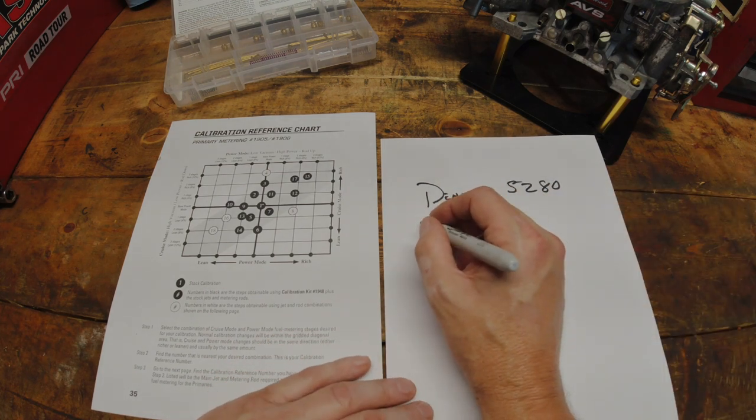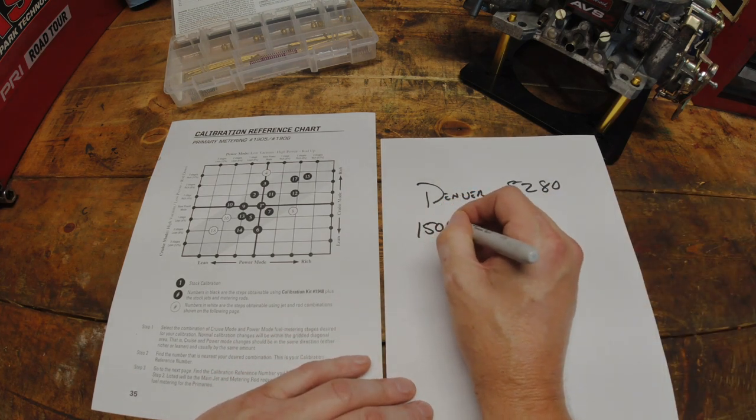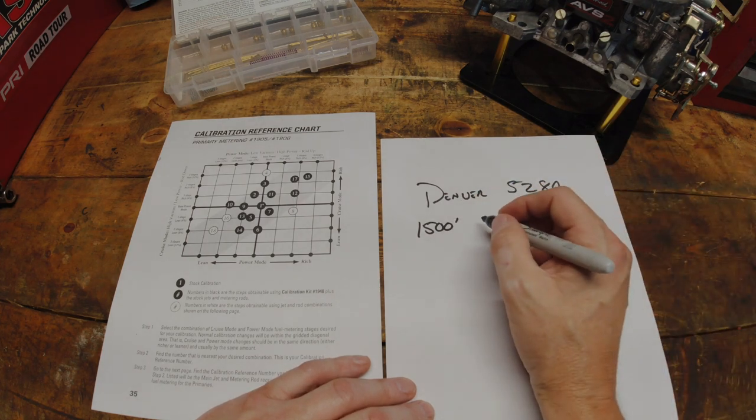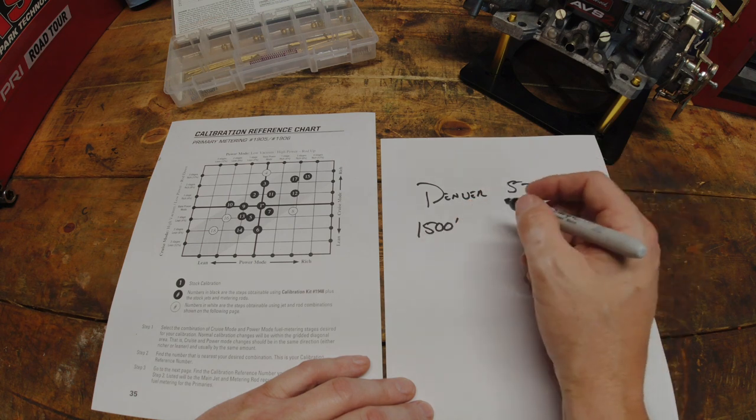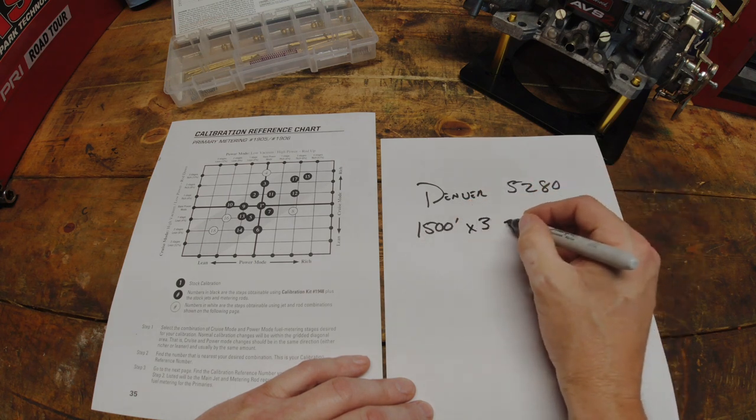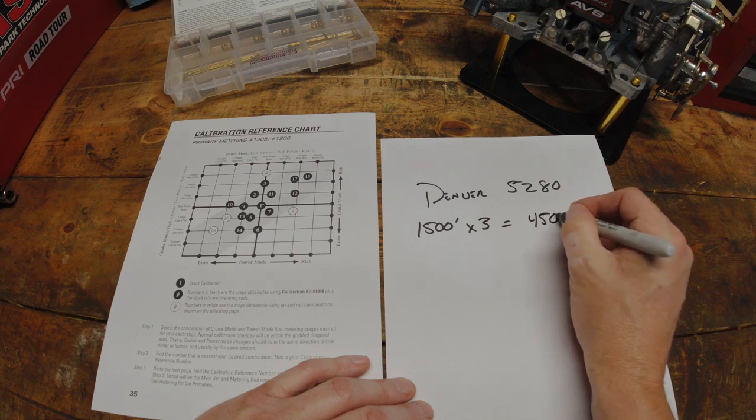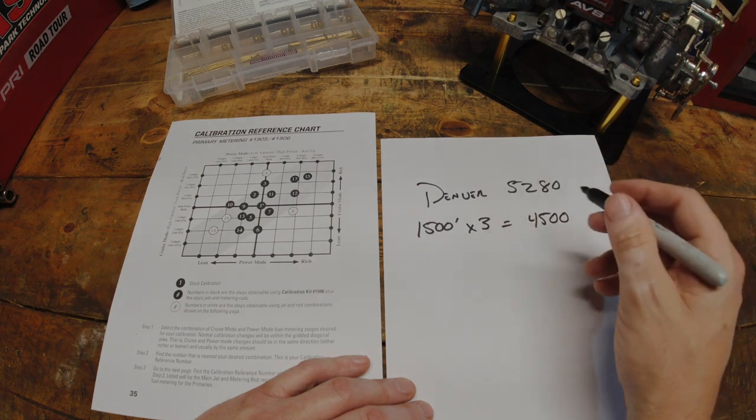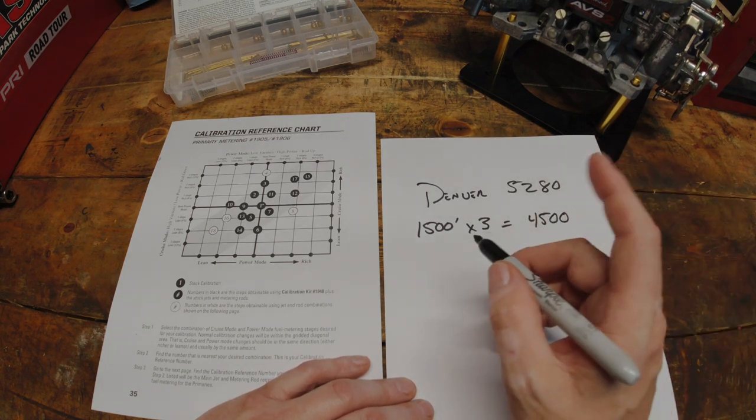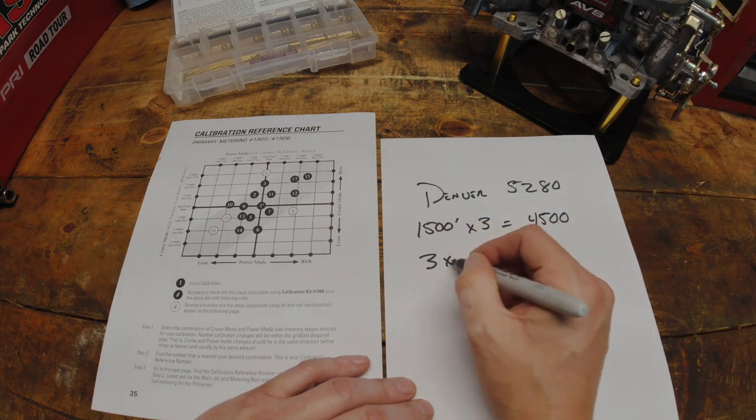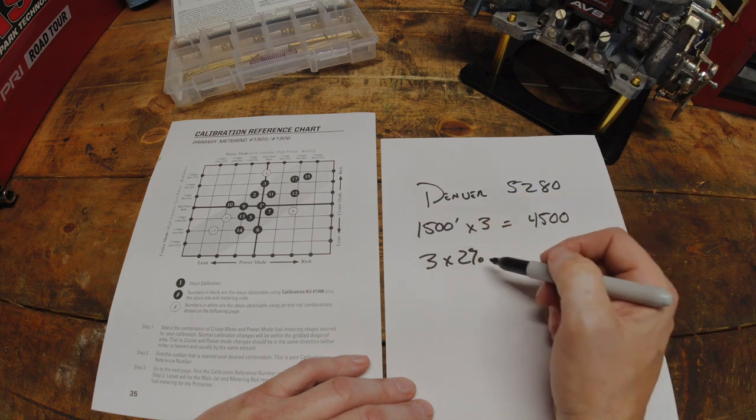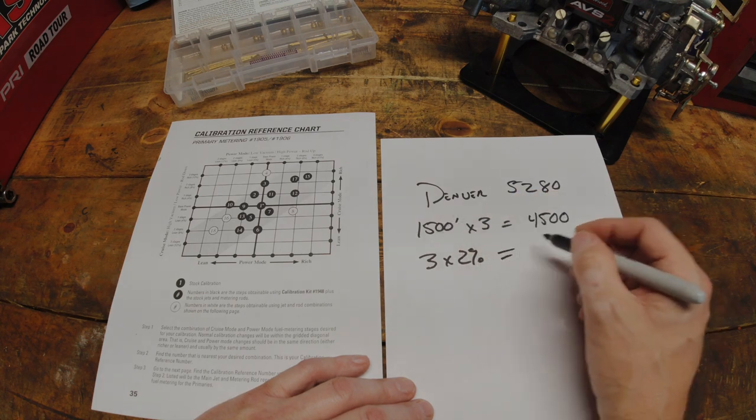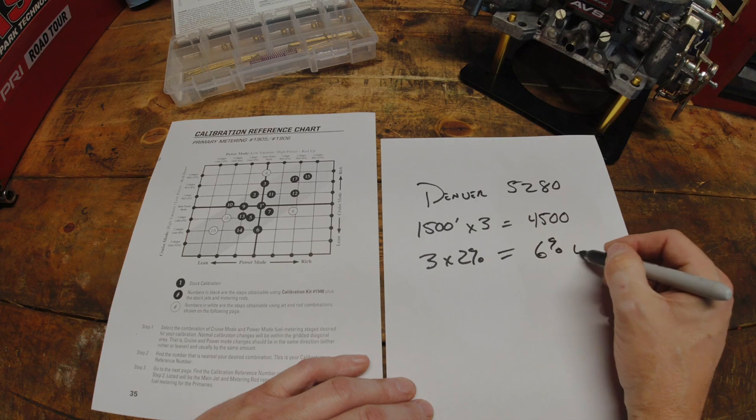So, if we remember here, for every 1,500 feet, so that's going to be our reference, and how many of 1,500 will get us close to that? So, if we multiply that by 3, that'll get us to 4,500. That gives us within the 1,000 that we were looking for. Now, 3 times the 2%, because we're going to use 2% lean for every 1,500 feet, gives us 6% leaner. That's where we need to concentrate.